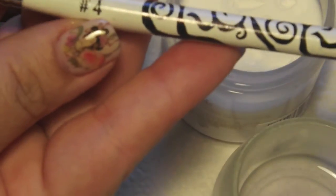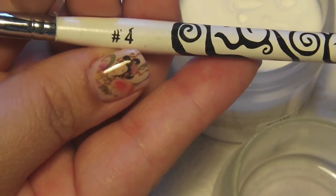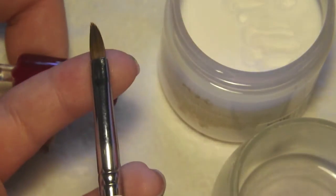So what I like to use for doing 3D bows is a number 4 brush, and this is an oval. That's what the tip looks like.